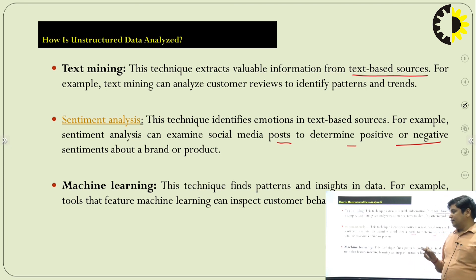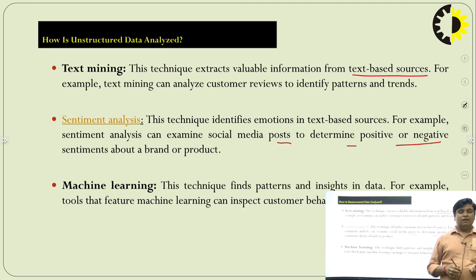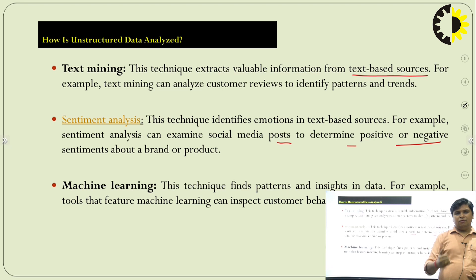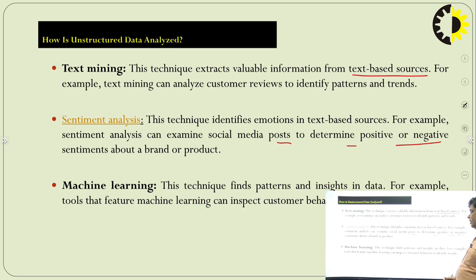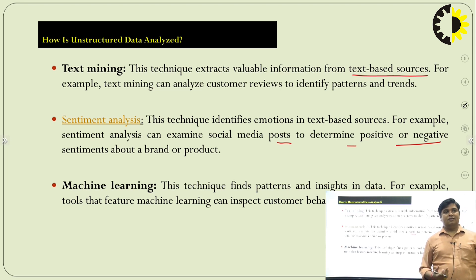The second technique is machine learning. Basically, machine learning is a technique in which we first prepare a model on a particular input dataset, then we provide new data to that model, and the model predicts output based on what it learned previously. This technique finds patterns in the data. For example, tools using machine learning can inspect customer behavior to identify trends.